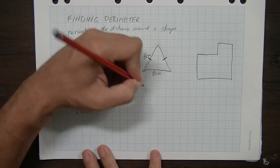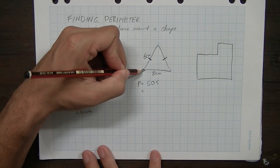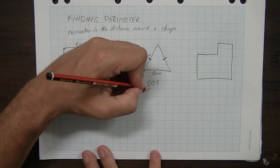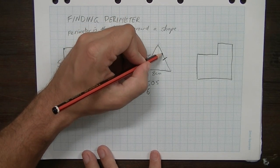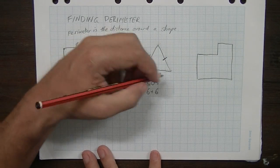Okay, so using our same rule, perimeter equals SOS, I'm going to start in my bottom left hand corner. I'm going to move through the first side, which is 6, then I'm going to move to the second side, which is 6, then I'm going to move to the third side, which is 8.